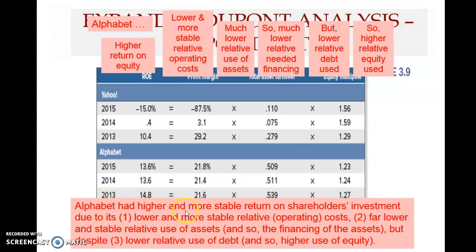In conclusion, Alphabet had higher and more stable return on shareholders' investment due to two main factors: lower and more stable relative operating costs, and far lower and more stable relative use of assets. Even though Alphabet uses less debt — which would tend to reduce ROE — the gains from the first two factors outweigh this, resulting in an overall higher ROE for Alphabet.